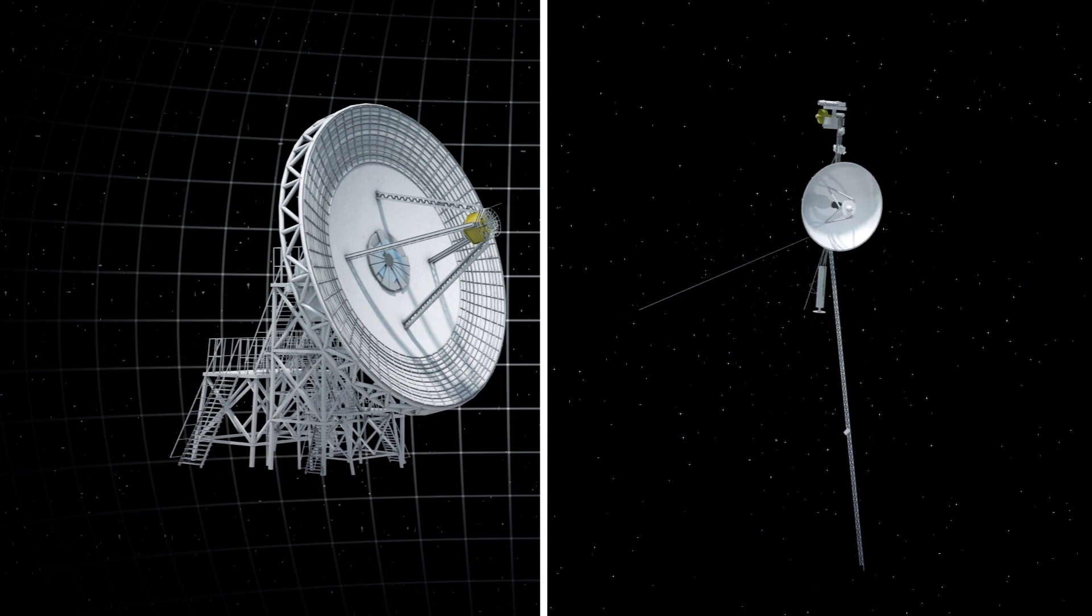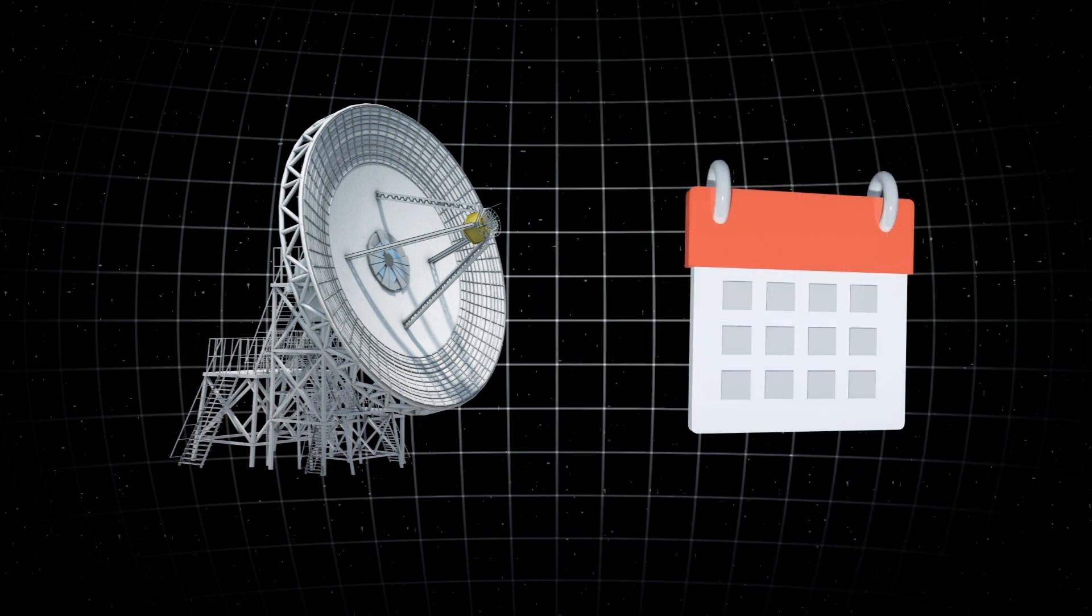The dish, named Deep Space Station 23, is expected to be completed in two and a half years.